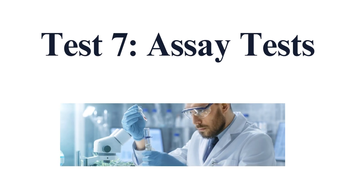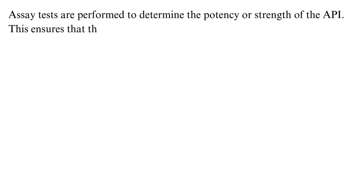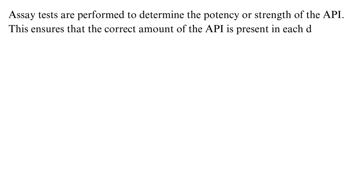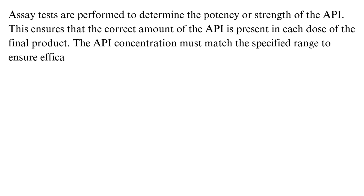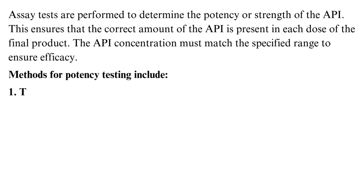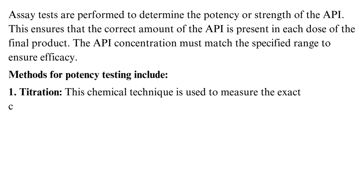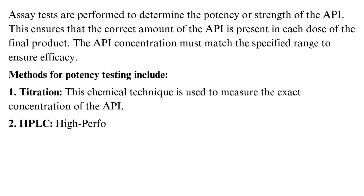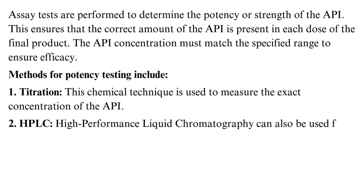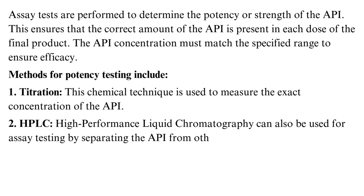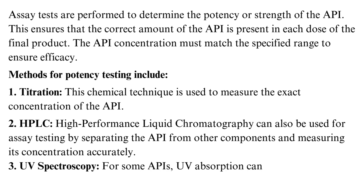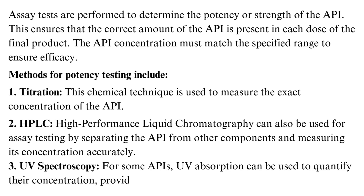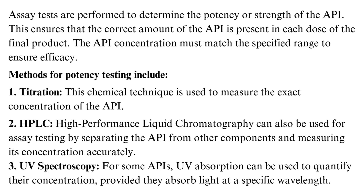Test 7: Assay Tests. Assay tests are performed to determine the potency or strength of the API, ensuring that the correct amount is present in each dose of the final product. The API concentration must match the specified range to ensure efficacy. Methods for potency testing include: titration, which measures the exact concentration of the API; HPLC, which separates the API from other components and measures its concentration accurately; and UV spectroscopy, which can quantify concentration for APIs that absorb light at a specific wavelength.